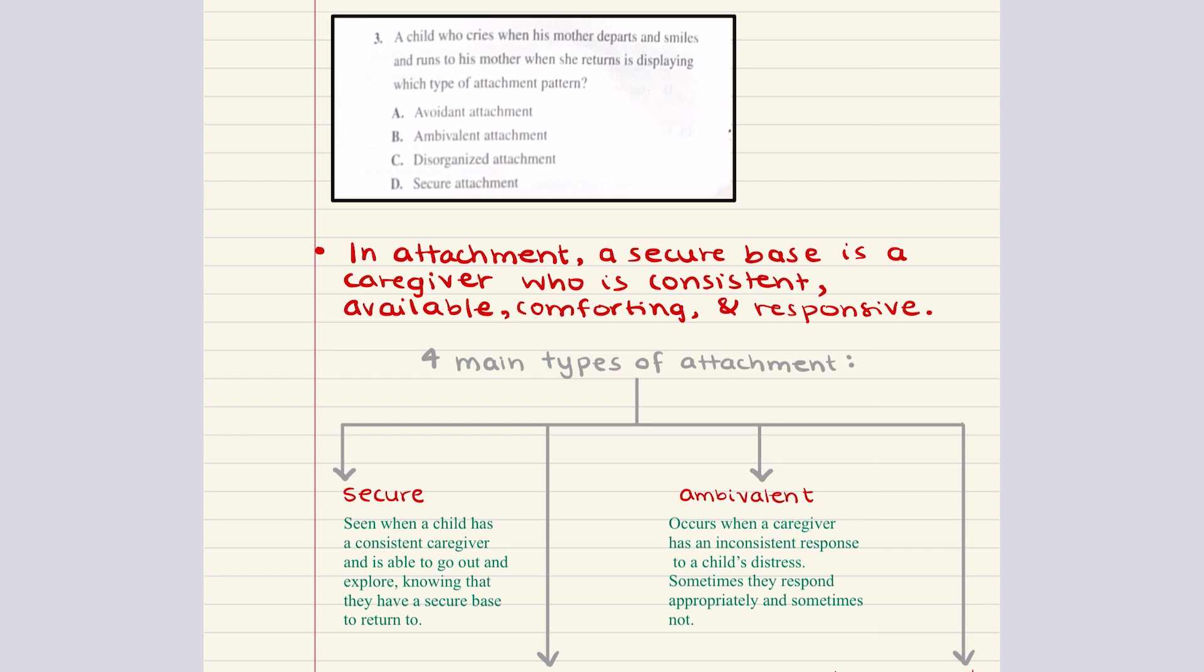Secure attachment. This requires a consistent caregiver. So the child is able to go out and explore knowing that they have a secure base to return to. And so the child, they will show strong preference for the caregiver here. Then we have avoidant attachment. This occurs when the caregiver has little or no response to a distressed crying child. And the child will actually show no preference for the caregiver compared to strangers. Then we have the ambivalent attachment. This occurs when a caregiver has an inconsistent response to a child's distress. Sometimes they respond appropriately and sometimes they are neglectful. And so the child will become distressed when the caregiver leaves and they will be ambivalent when they return. Then the last attachment we talked about is disorganized attachment. And this occurs when the caregiver is abusive. The child shows no clear pattern of behavior in response to the caregiver's absence or presence. And they may show repetitive behaviors.